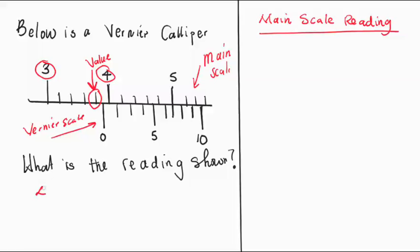It should be 4 minus 3, which will give us 1. Then you ask yourself how many small lines are in between these two numbers? There are 5. So you divide by 5.